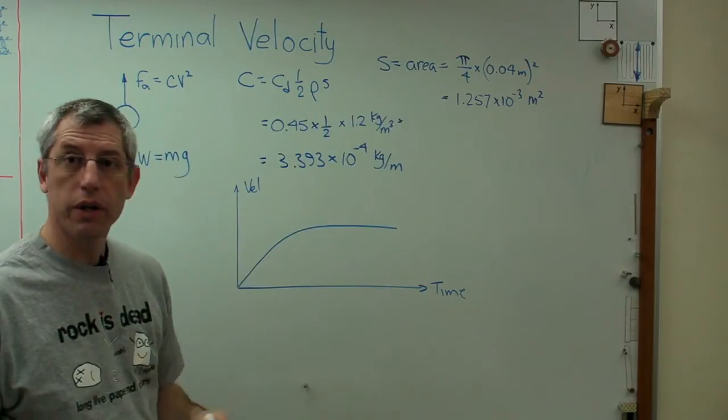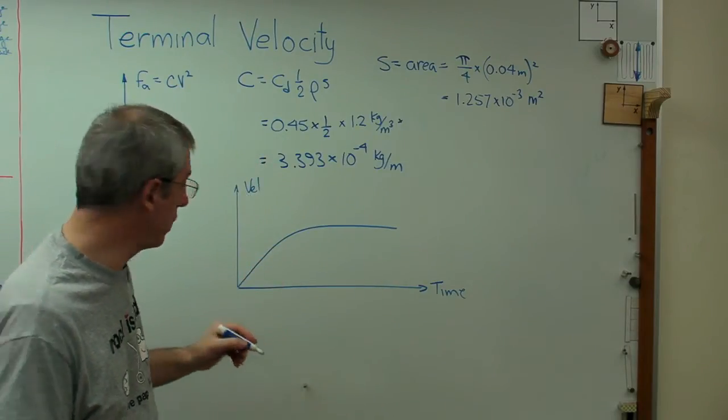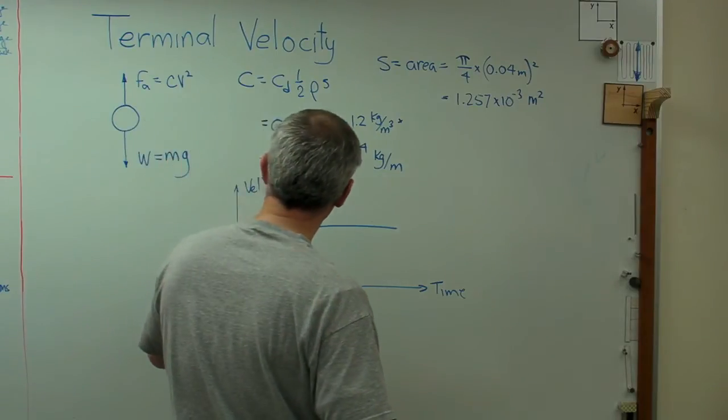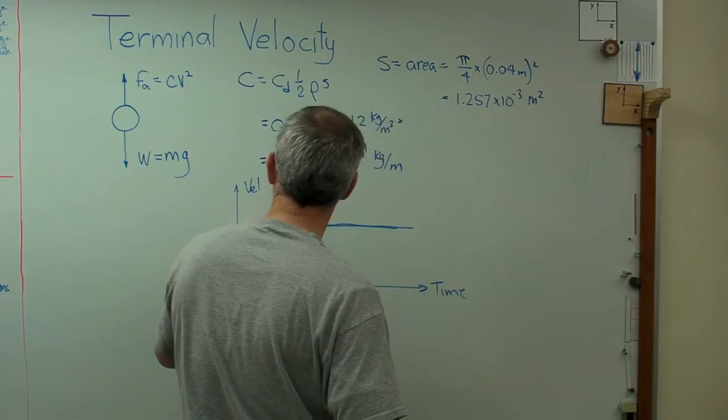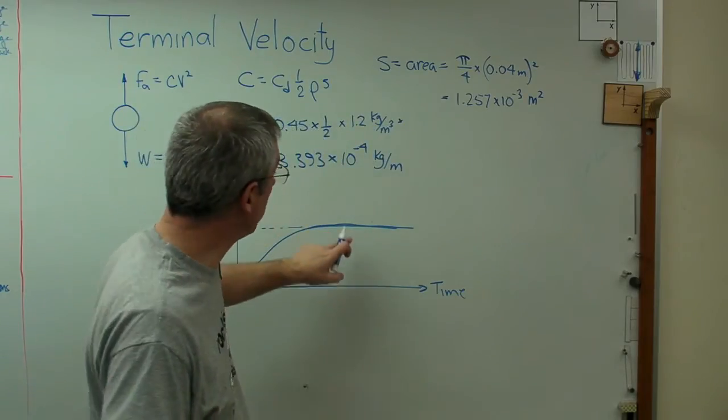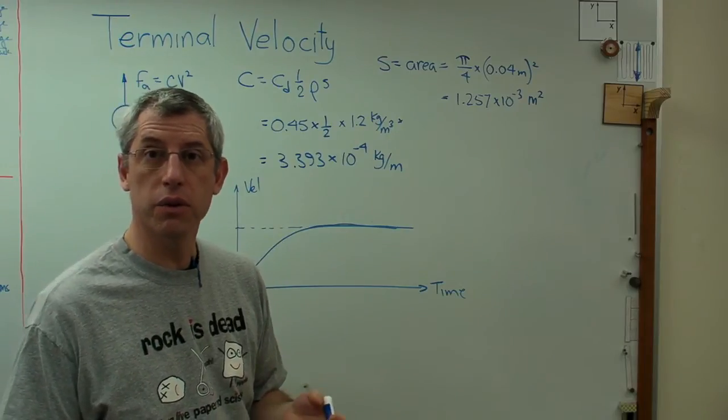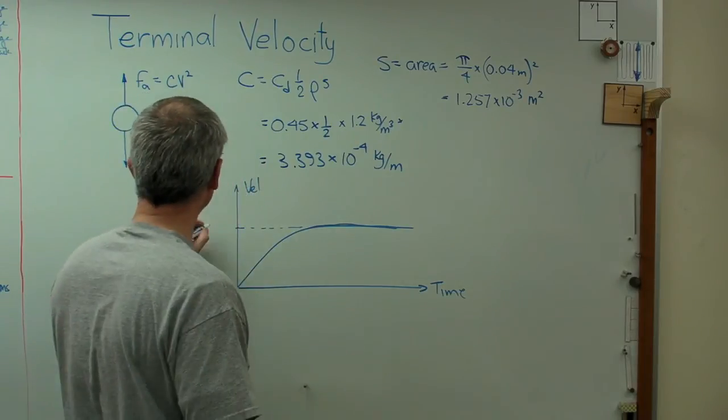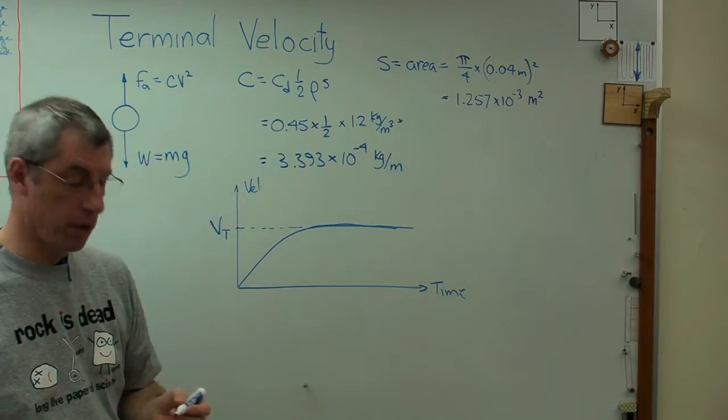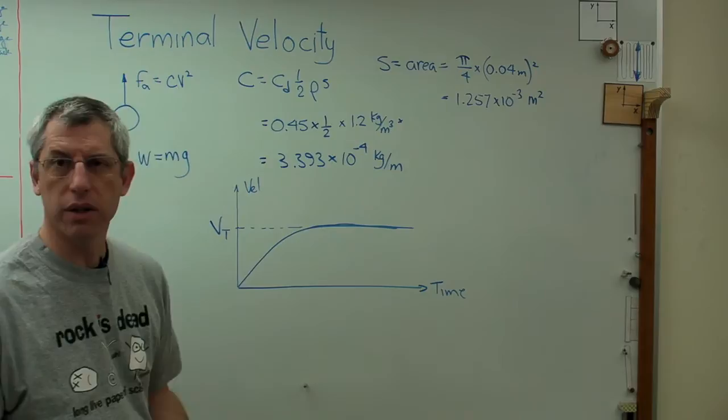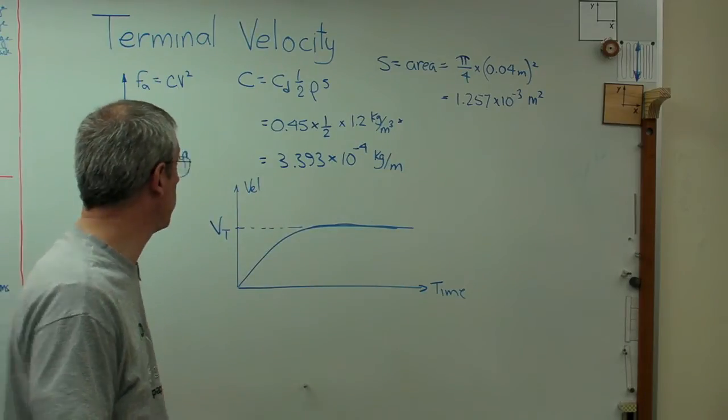You start with acceleration increasing linearly, because you're going so slow, aerodynamics doesn't matter. And you get to the point where the velocity goes horizontal. No more acceleration. The slope of this curve is zero. When the rate of change of velocity equals zero, there's no acceleration. And so in that plot, that would be the terminal velocity. To me, this one makes a little more sense. I can kind of see that one. Either of the two plots I've just drawn is okay.